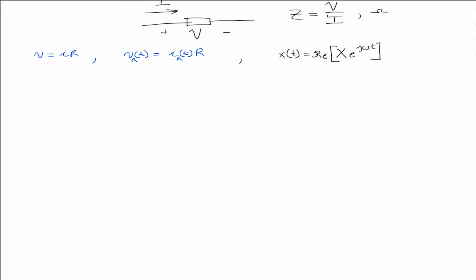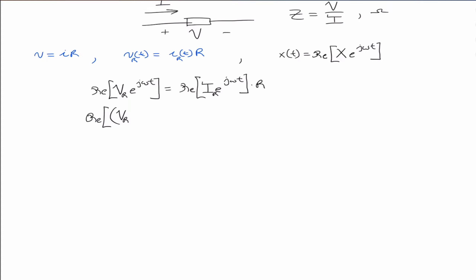So V in this case is going to equal the real part of V_R times the complex exponential e^(jωt), and that equals the current — we want the real part as well — through the resistor times e^(jωt) times resistance R. We can then factor and move the right-hand side over to the left-hand side, and we get the real part of (V_R minus R·I_R) times e^(jωt) equal to 0.